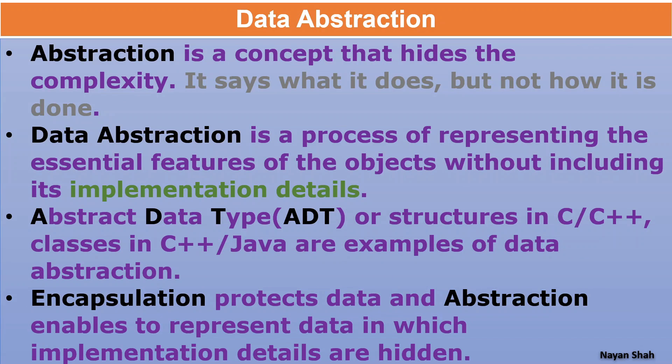Next is data abstraction. Data abstraction is a concept where it says what you are doing or what it is doing, but it won't say how it is being done. So that is data abstraction - it hides the complexity.